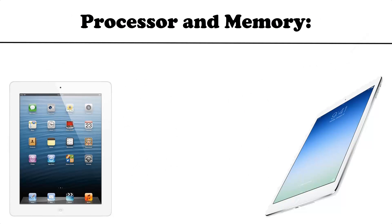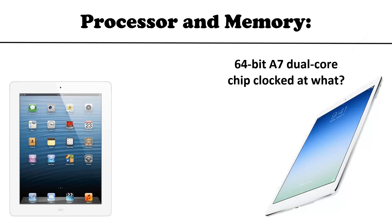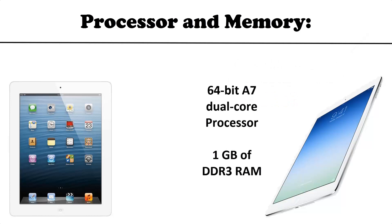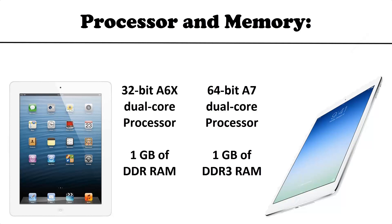The iPad Air comes with the same processor found in the iPhone 5s, which is a 64-bit A7 dual-core processor. We don't exactly know the clock frequency, but it may come with a higher clock or the same 1.3GHz as the iPhone 5s. It has 1GB of DDR3 RAM. The iPad 4 came with a 1.2GHz dual-core A6X processor, which was 32-bit, also with 1GB of RAM. Based on benchmarks, the A7 chip is quite powerful — the iPad Air is twice as fast as the iPad 4.